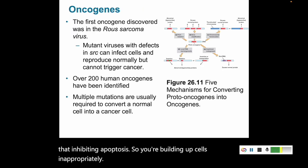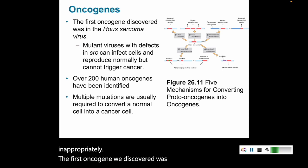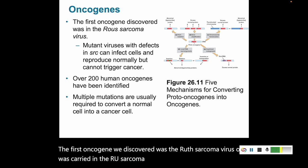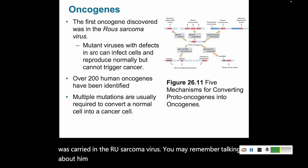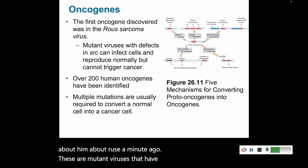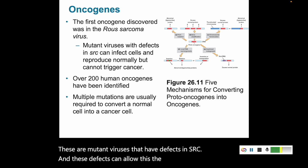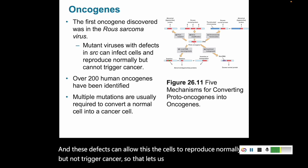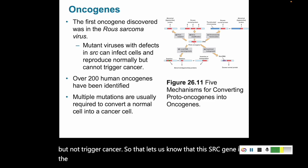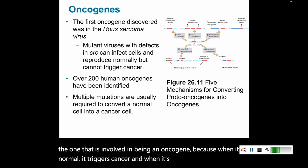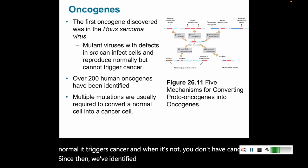The first oncogene we discovered was carried in the Rous sarcoma virus. Mutant viruses that have defects in SRC allow cells to reproduce normally but not trigger cancer, which tells us that the SRC gene is the one involved as an oncogene — when it's functioning in its oncogenic form it triggers cancer, and when it's not, you don't have cancer. Since then we've identified over 200 human oncogenes.